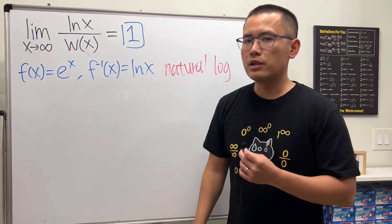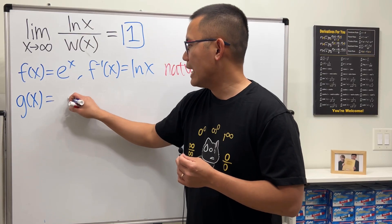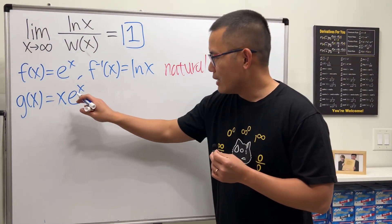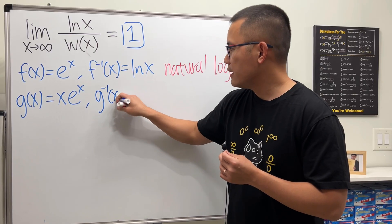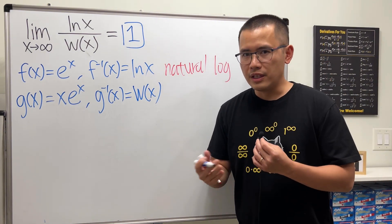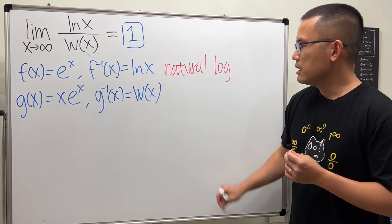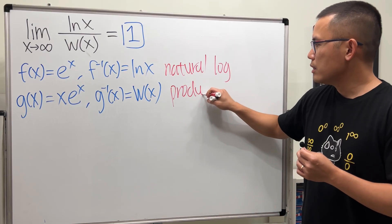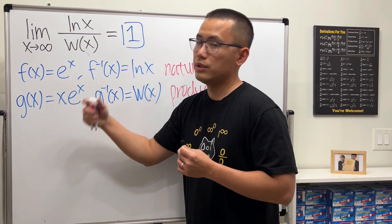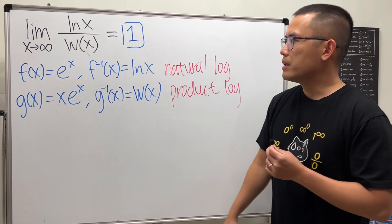The Lambert W function is also an inverse of some function. That function is not just eˣ — we multiply by x, giving us x·eˣ. The inverse of x·eˣ is precisely the Lambert W function. Lambert is a person's name, and this function is also called the product log — 'product' because it is the product of x and eˣ. So the Lambert W function is defined to be the inverse of x·eˣ.